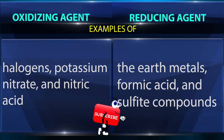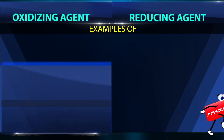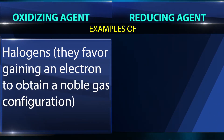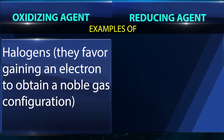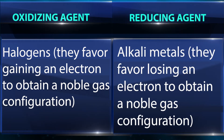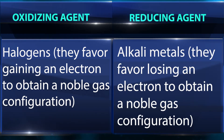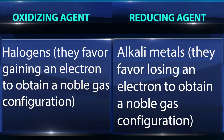Examples of reducing agents include alkali metals, formic acid, and sulfide compounds. Alkali metals favor losing an electron to obtain a noble gas configuration.